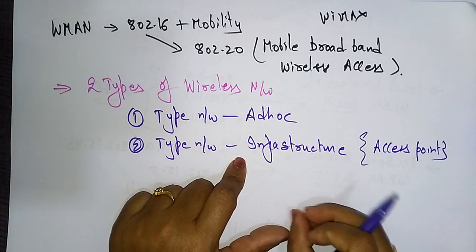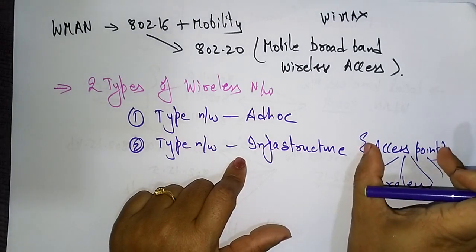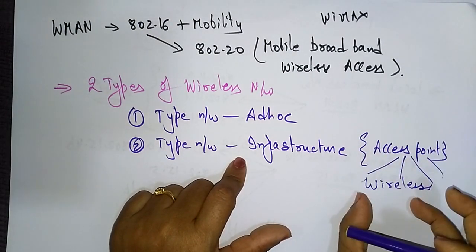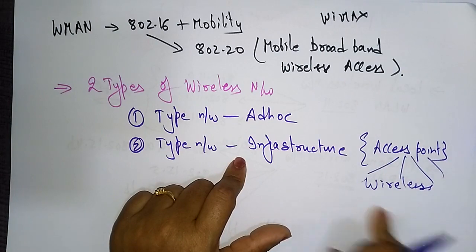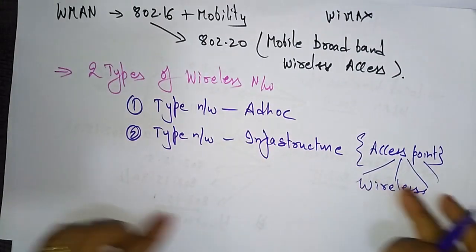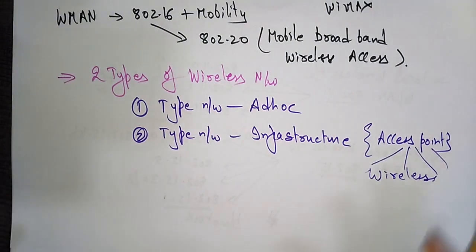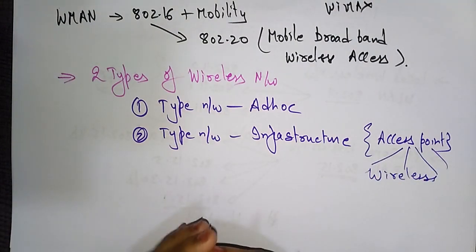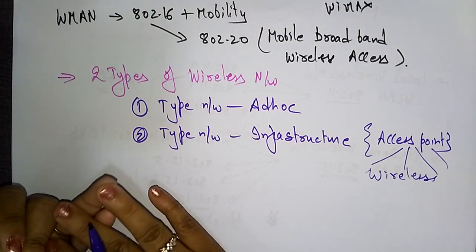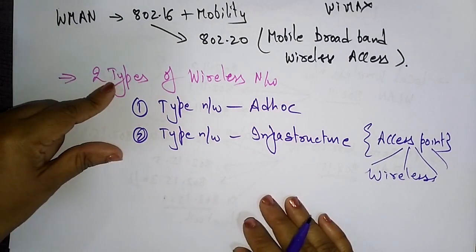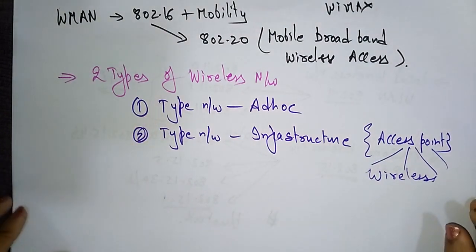In the infrastructure type network, an access point is present which acts as the infrastructure. With the help of this access point, all communication is wireless. The two types of wireless networks are ad hoc and infrastructure. The different IEEE versions cover wireless LAN, wireless MAN, and wireless PAN.